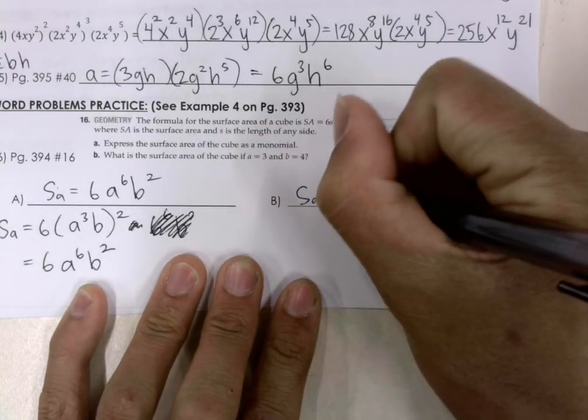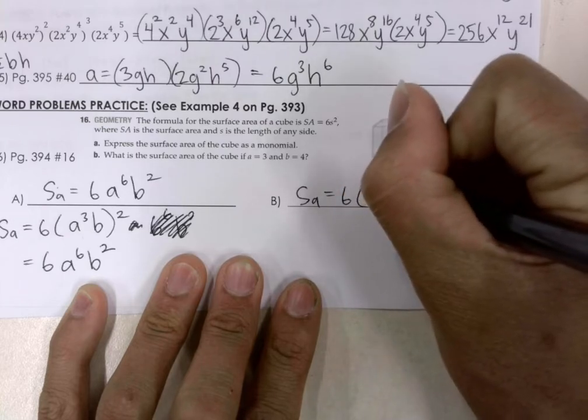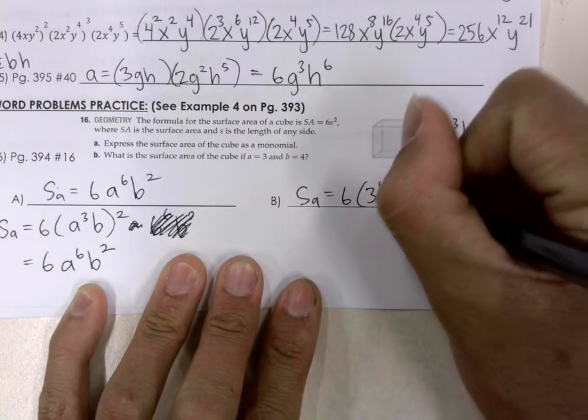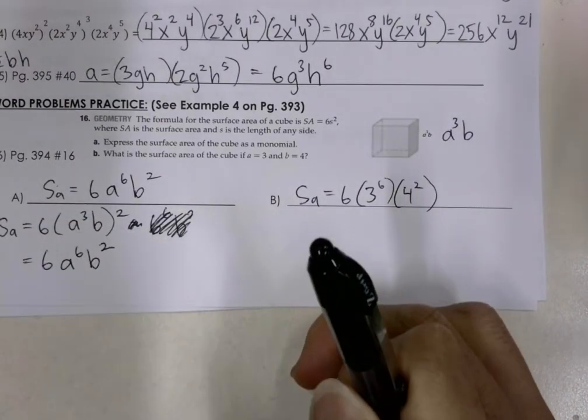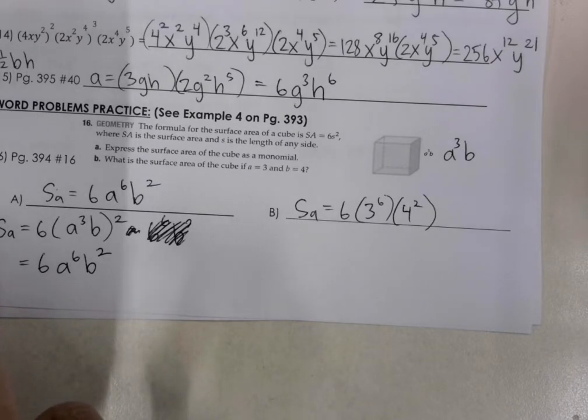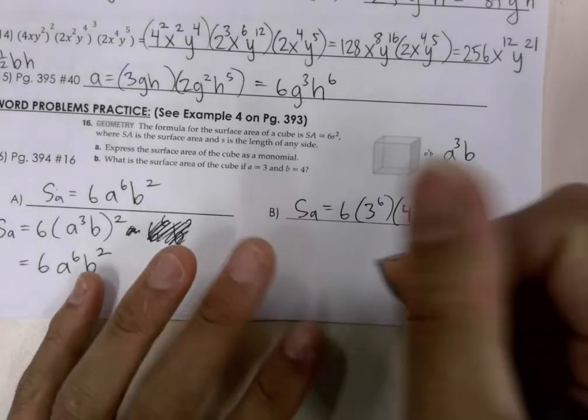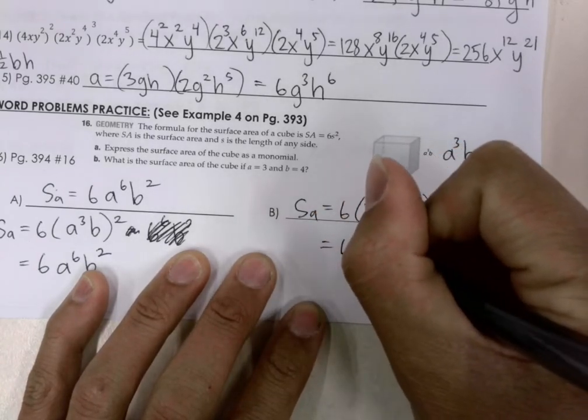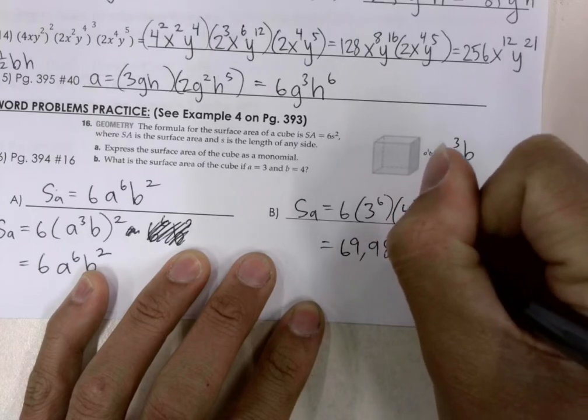So surface area is equal to 6 times 3 to the 6 times 4 to the 2. So we'll go ahead and grab a calculator and see what this equals. We've got 6 times 3 to the power of 6 times 4 to the power of 2 is 16. So the surface area is going to equal 69,984.